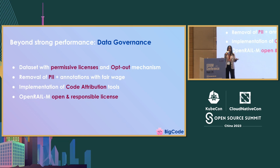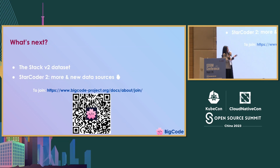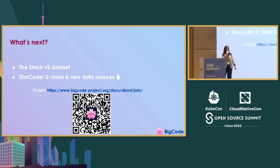If the model generates code that is exactly the same as training data, you should still attribute the author. For what's next, we're training a new version of StarCoder and also going to release a new version of The Stack with more data and also newer data. If you're interested in joining, you can scan the QR code and fill out the form and we'll be very happy to collaborate with you. Thank you.